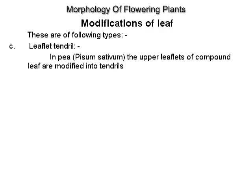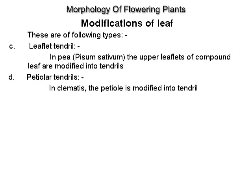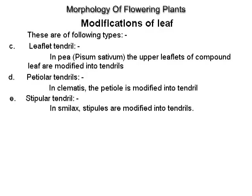Leaflet tendril: in pea (Pisum sativum), the upper leaflets of the compound leaf are modified into tendrils. Petiole tendril: in Clematis, the petiole is modified into a tendril. Stipular tendril: in Smilax, the stipules are modified into tendrils.